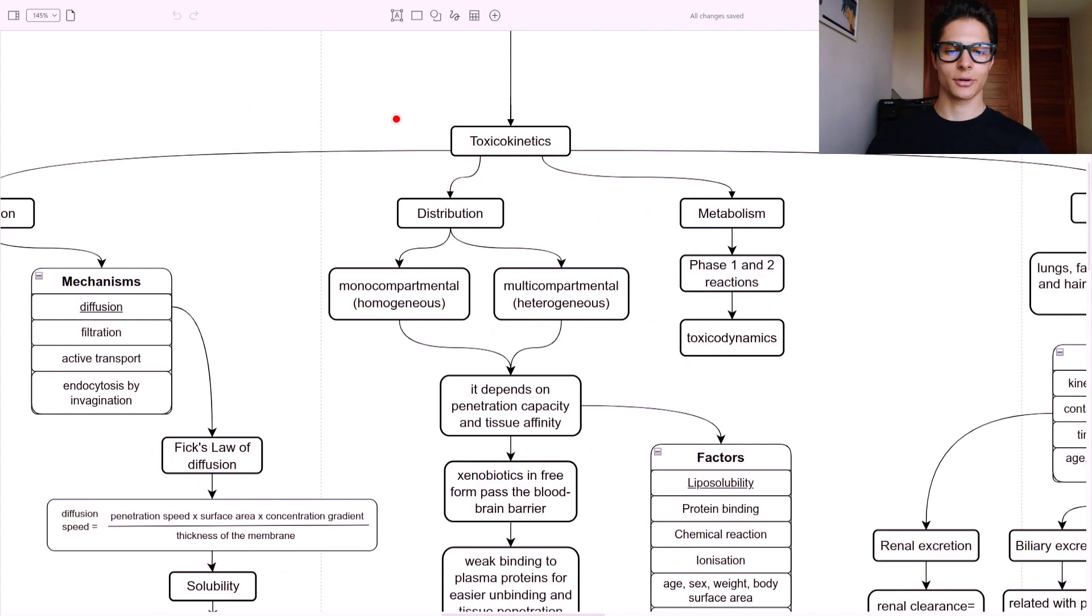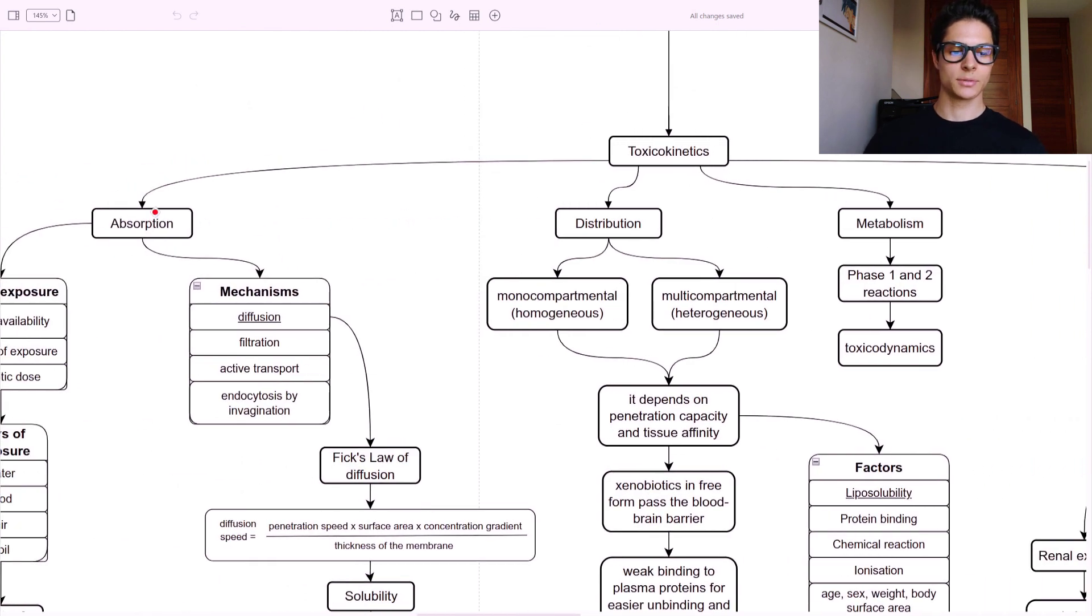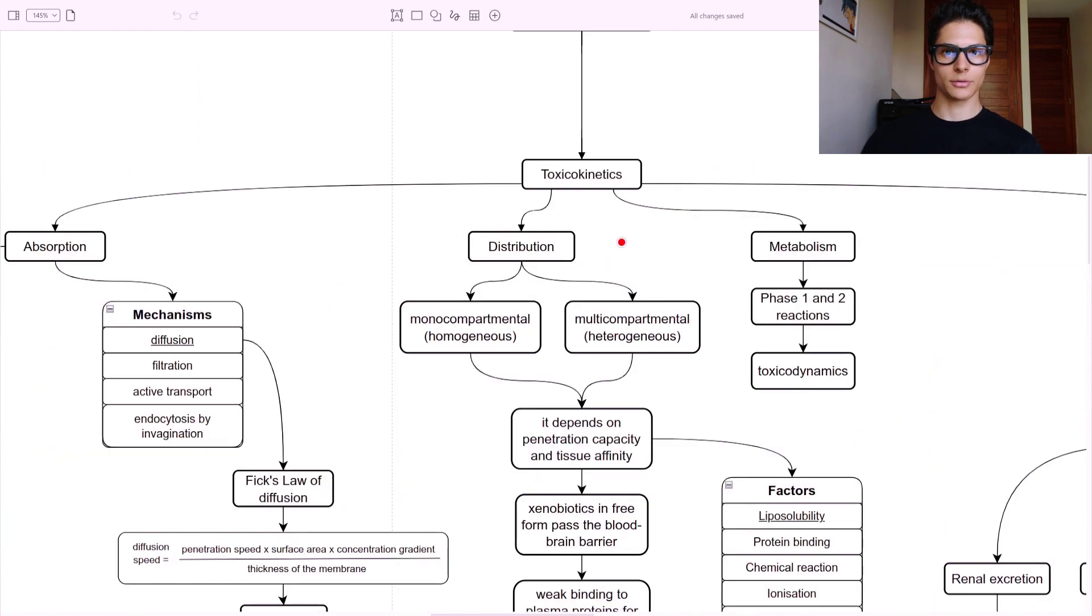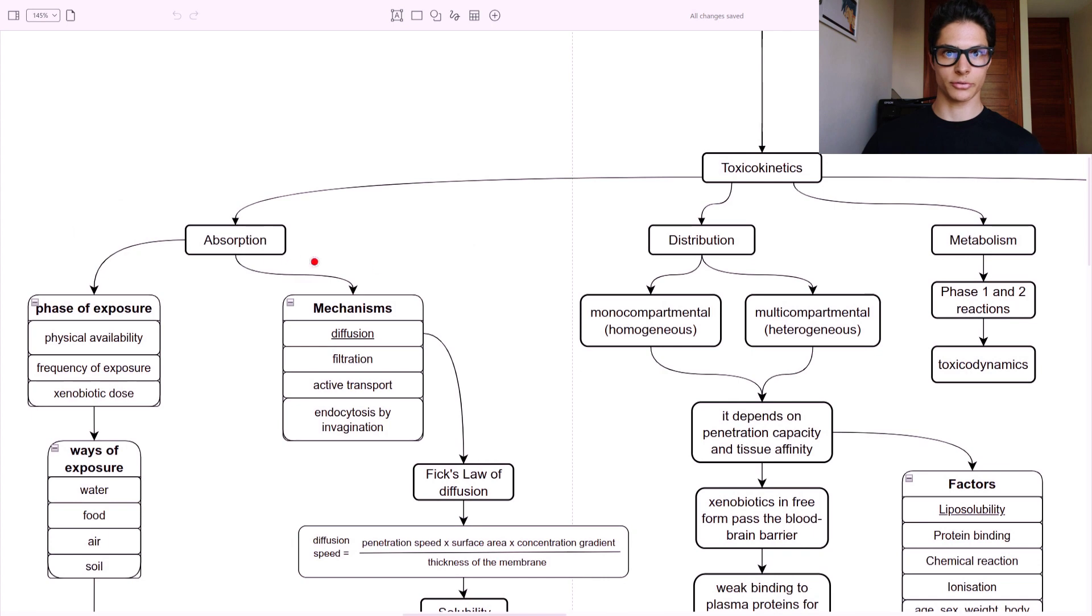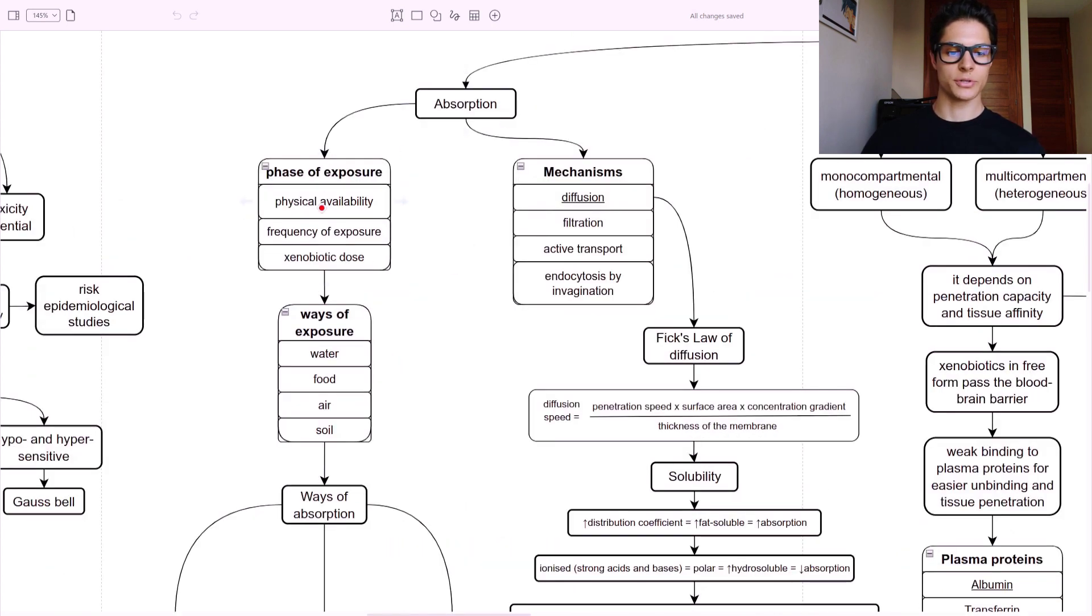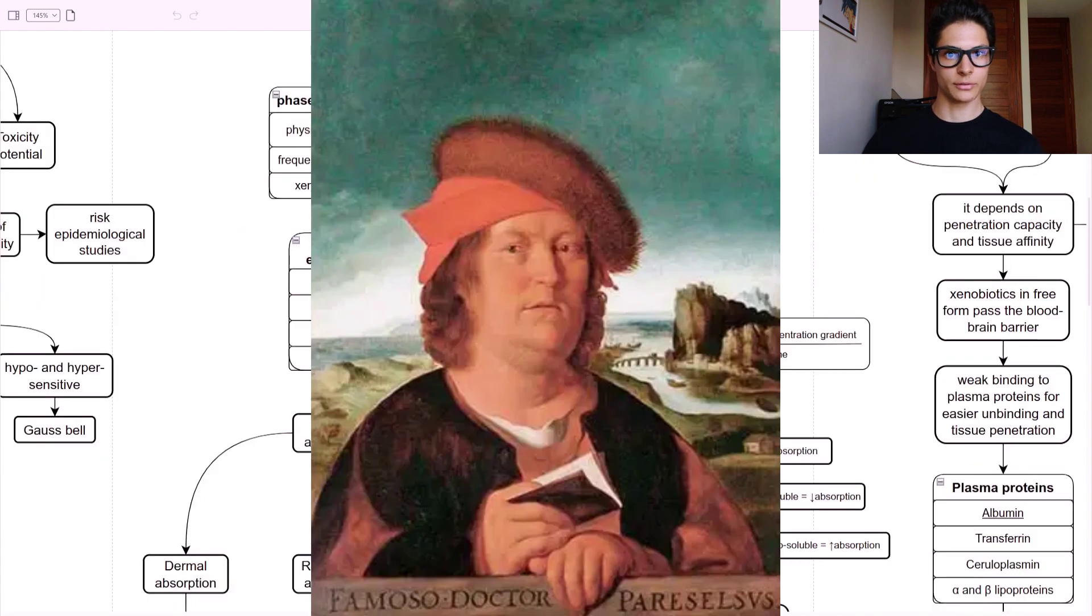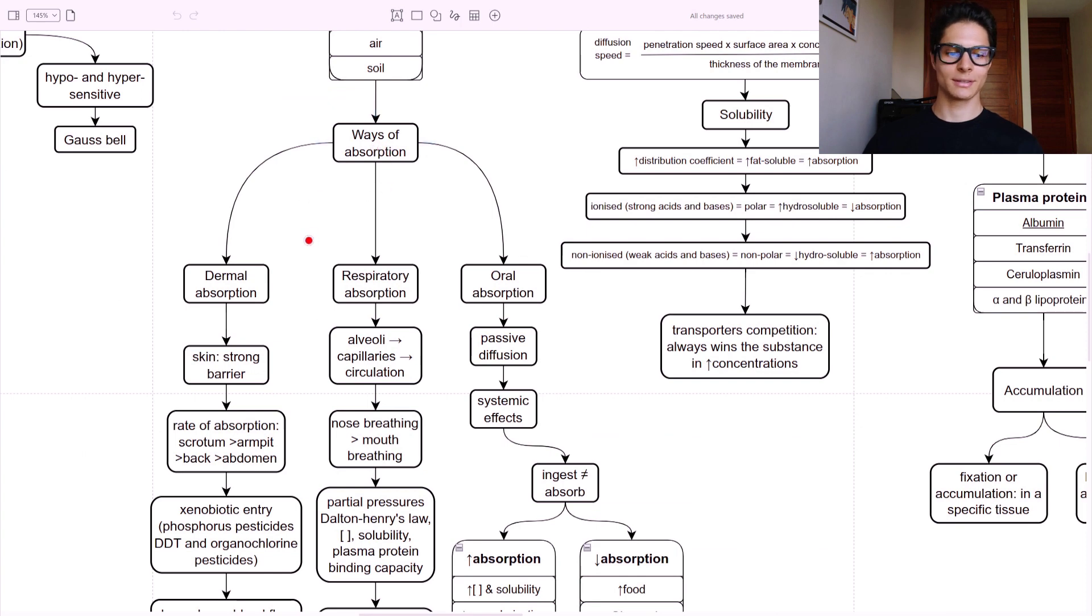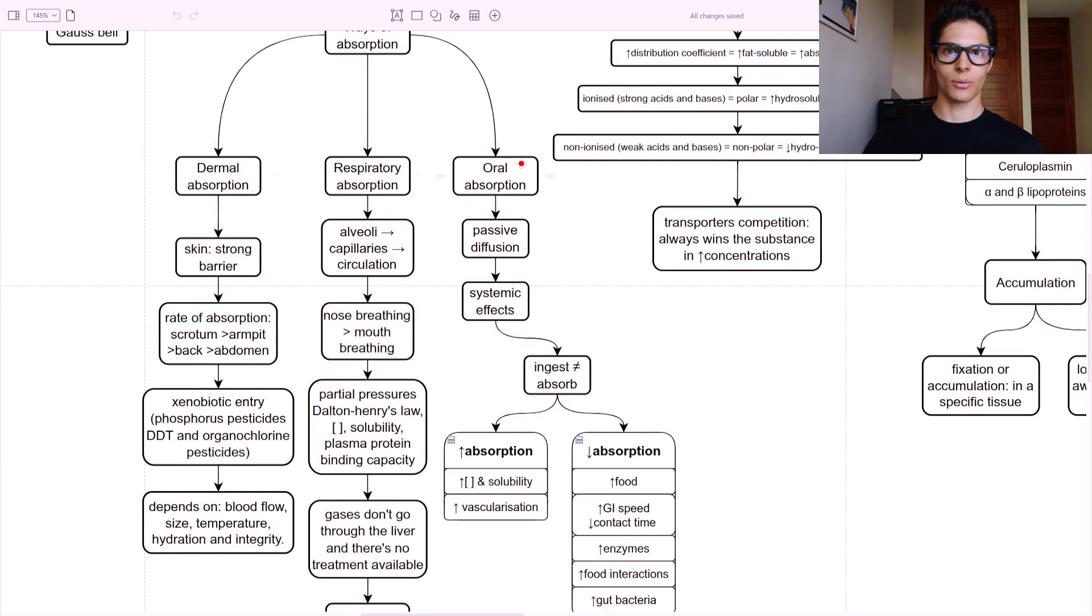So now let's talk about toxicokinetics. Here we have four stages mainly - the absorption of the toxin, the distribution of the toxin, the metabolism, and the elimination. So if you have watched my videos on pharmacology, you probably know these steps. They are called pharmacokinetics and are summarized as LADME because in pharmaceuticals we also have the liberation step. So it's very similar. Absorption - phase of exposure. It can be physical availability, frequency of exposure, and xenobiotic dose. So it varies on the availability, frequency, and dose. Always dose. Ways of exposure through water, food, air, or soil. And the ways of absorption are through the skin, respiratory, or through the mouth - oral.